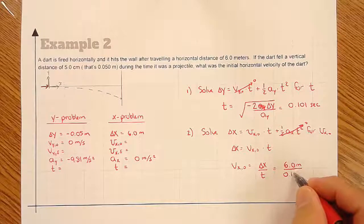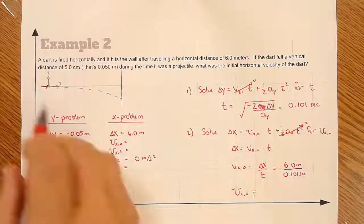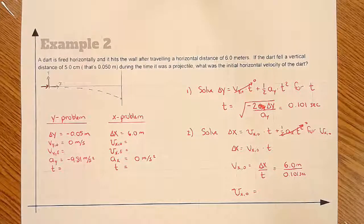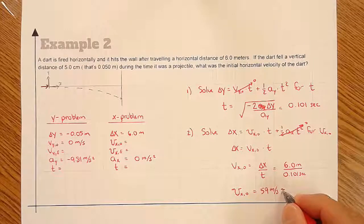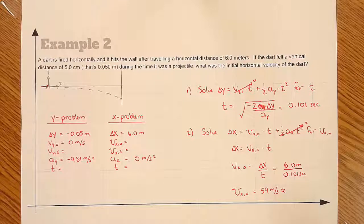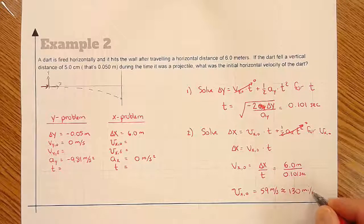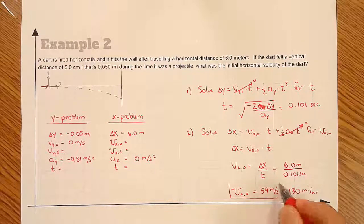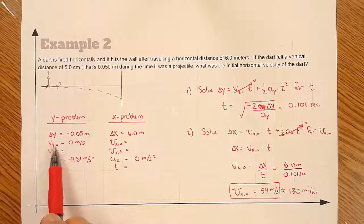The time is 0.101 seconds. So the initial velocity in the x direction — how fast the dart is going at the beginning — is 6 divided by 0.101, which gives us about 59 meters per second. Just for comparison, that's about 130 miles an hour — a pretty fast moving dart. So we can solve the exact same kind of problem. The important thing to remember is that if it's fired horizontally, the initial velocity in the y direction is zero.